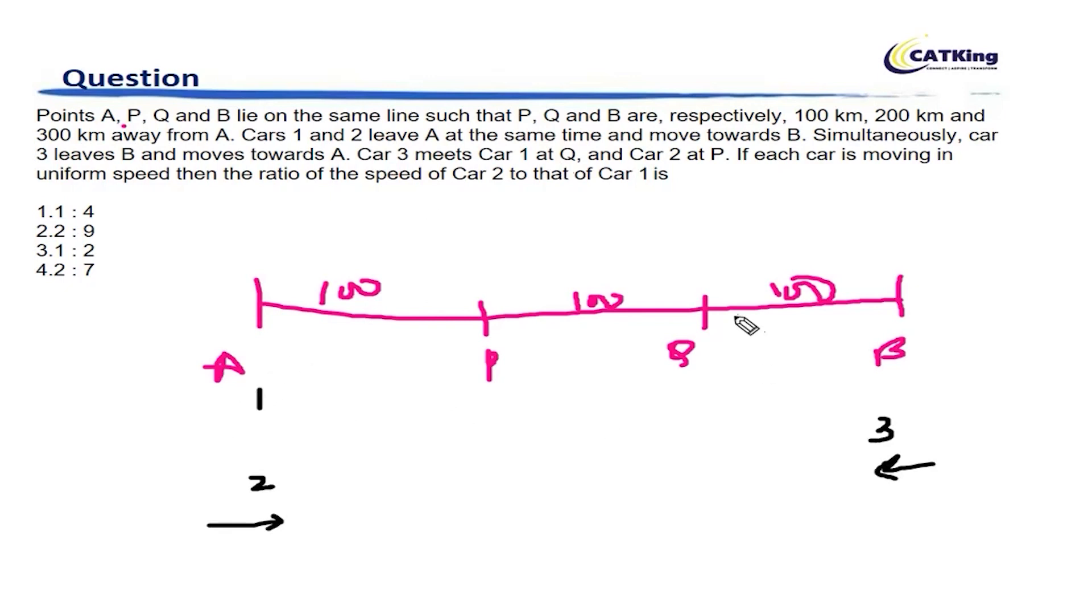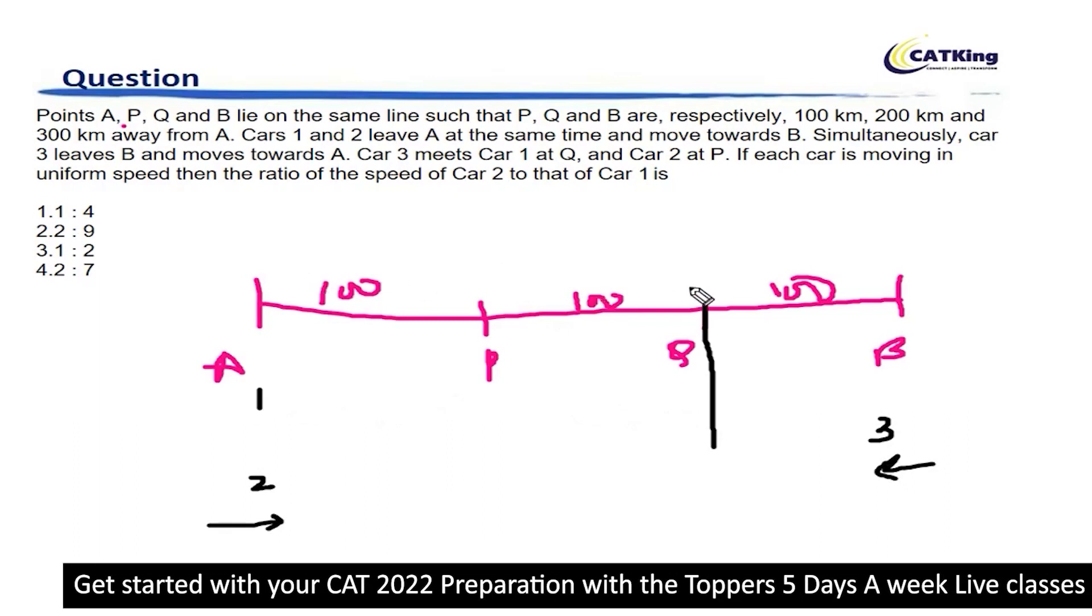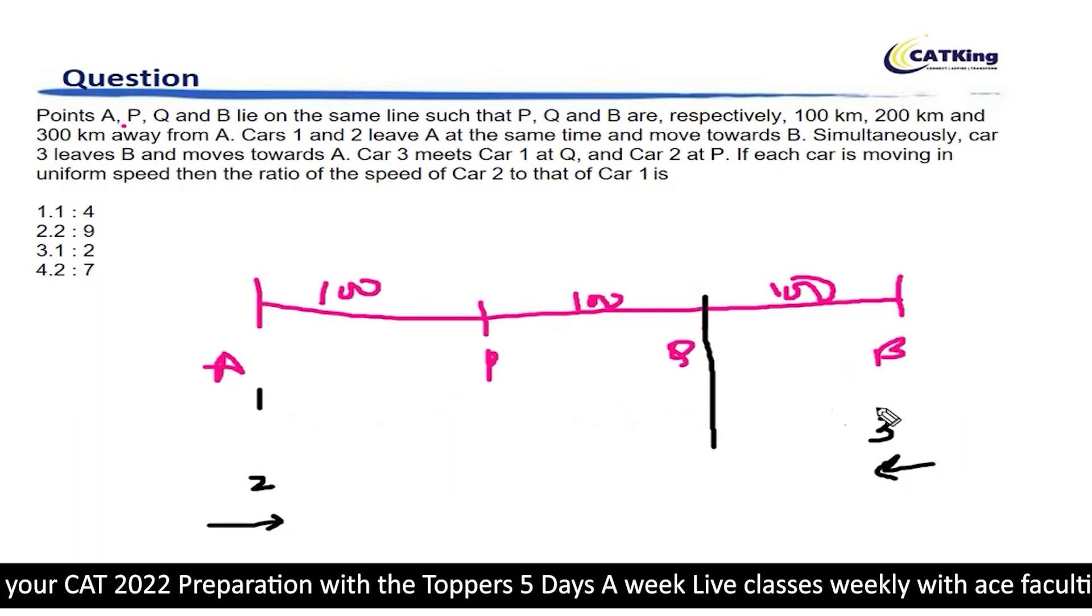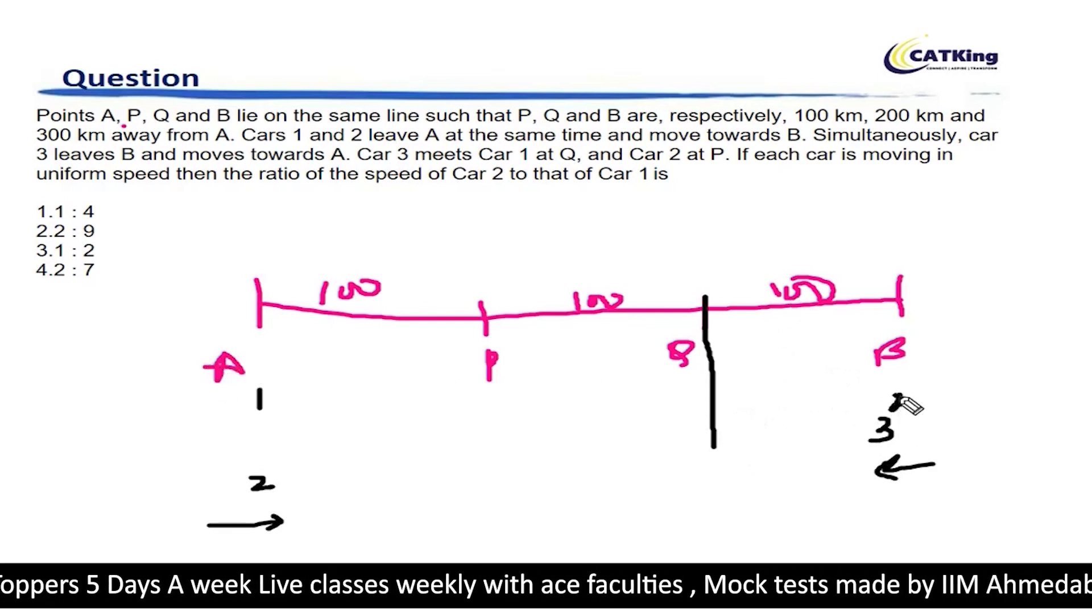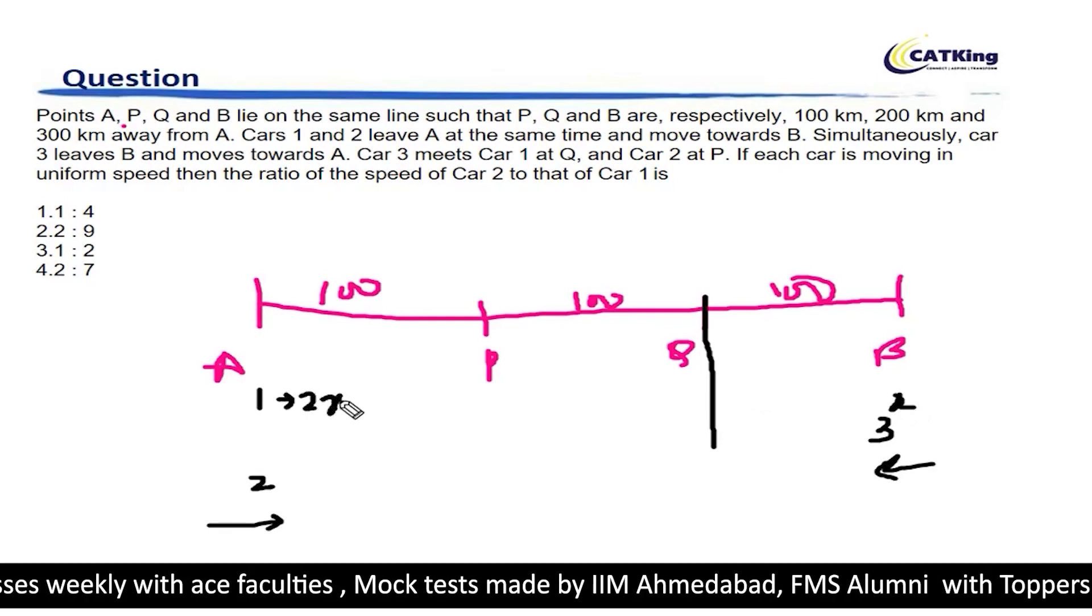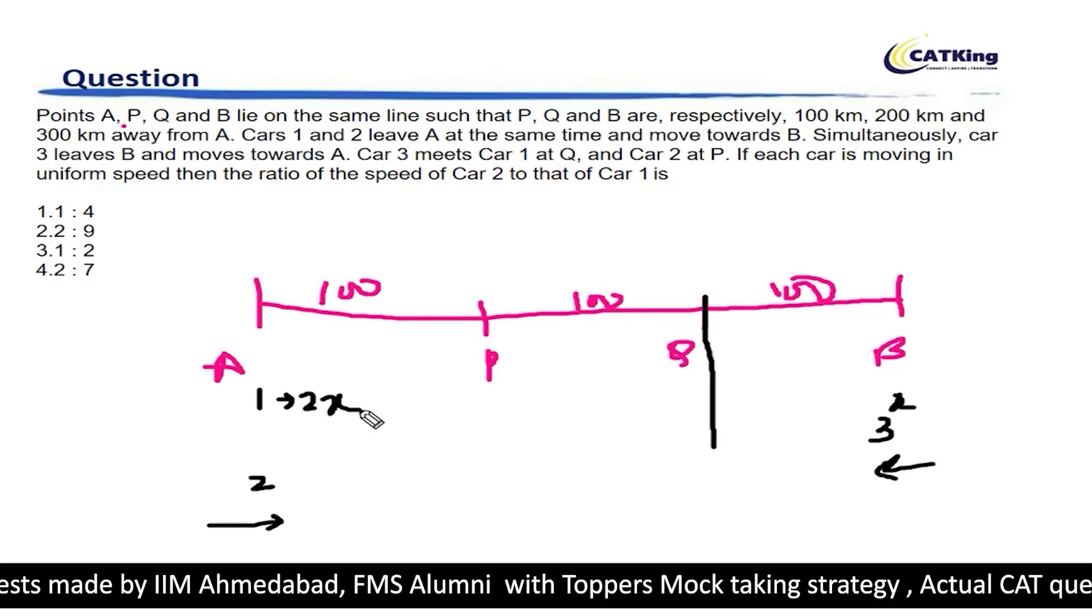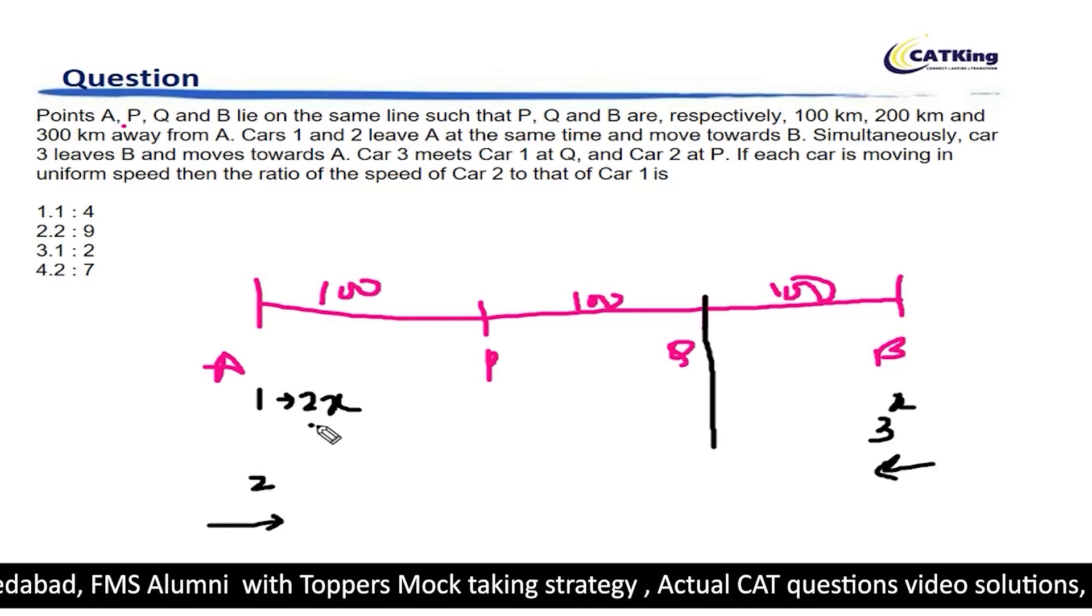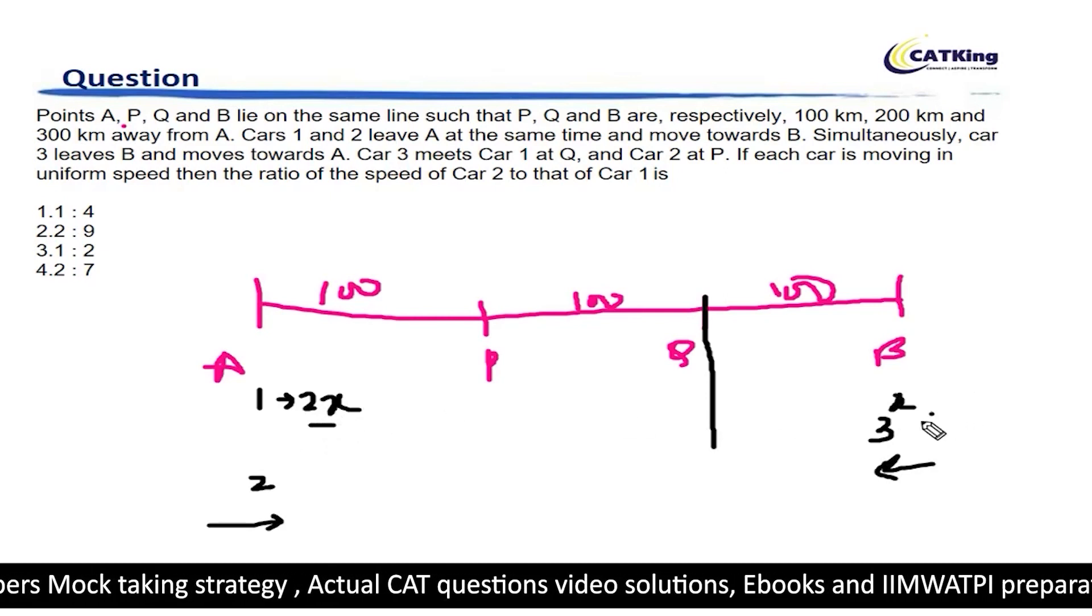Car 3 meets car 1 at Q. Car 1 has traversed 200 kilometers in the time car 3 has traversed 100 kilometers. So therefore, if the speed of car 3 is X, speed of car 1 will be 2X, because in the same amount of time the distance traversed is double. So if time is a constant, distance is directly proportional to speed. The speed of car 1 is 2X, speed of car 3 is X.